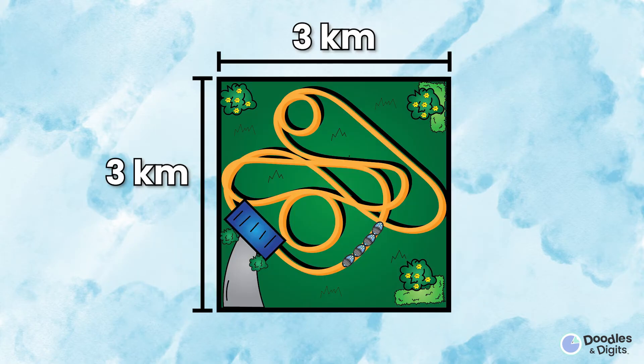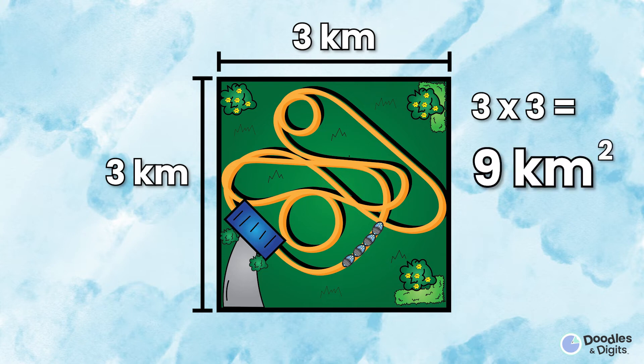Check out this roller coaster. You're going to multiply the length and the width, which is 3 and 3. 3 times 3 is 9. So our area is 9 kilometers squared.